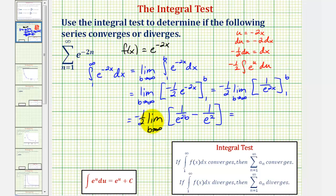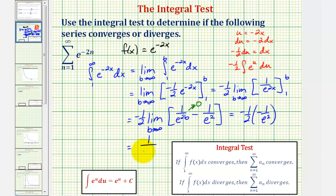As b increases without bound, the denominator of this fraction also increases without bound, and therefore this term approaches zero. So we have negative one half times negative one over e squared, which equals positive one over two e squared. Because this integral equals a finite value, the improper integral converges, and therefore the infinite series converges by the integral test.